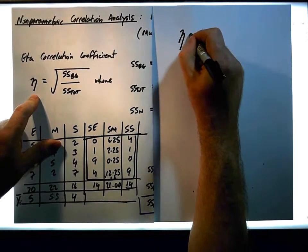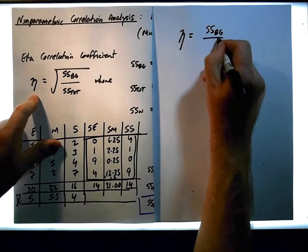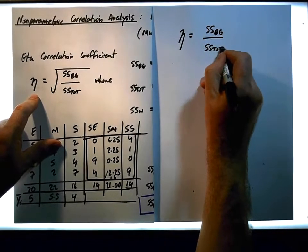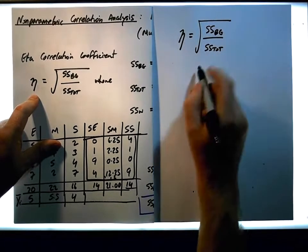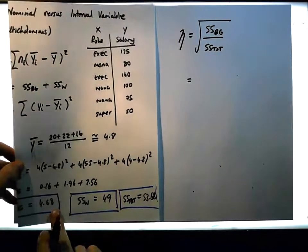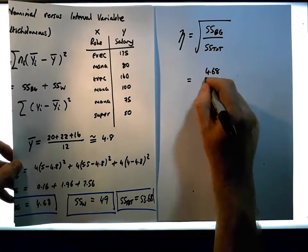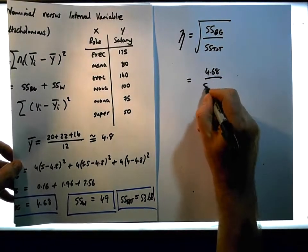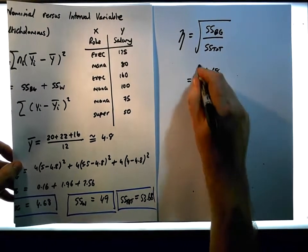So in this case here, we have eta is simply equal to the sum of squares between groups divided by the sum of squares total, and it's the square root of that. So that's going to give us the sum of squares between groups we just calculated to be 4.68, which needs to be divided by the sum of squares total, which is 53.68, and it's the square root of that.